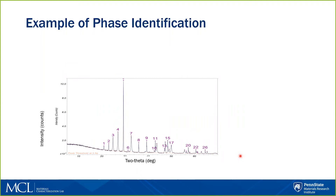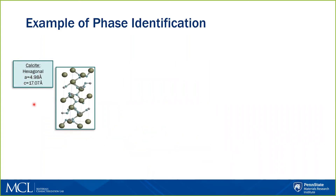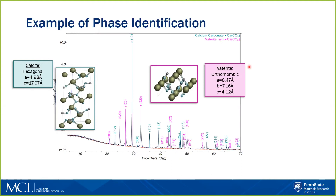In addition to a single compound sample like the one we showed previously, the technique has the advantage of being able to detect multiple compounds in a specimen. In this example, we have a material which contains two different forms of calcium carbonate. The first is what is known as calcite, and calcite has a hexagonal structure. The second is the form we call vaterite, and it has an orthorhombic structure.